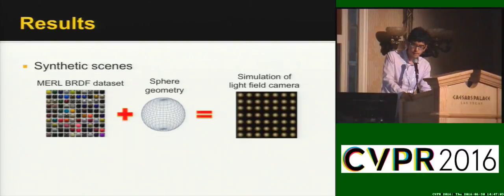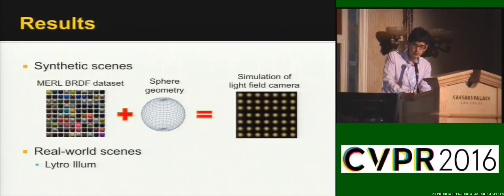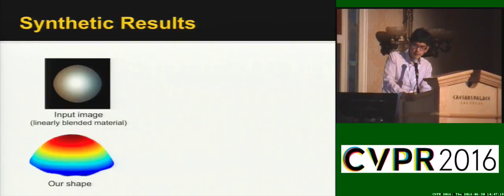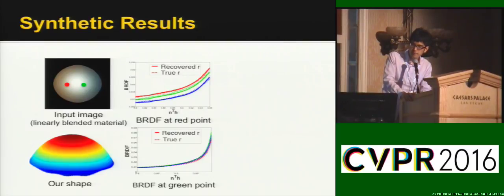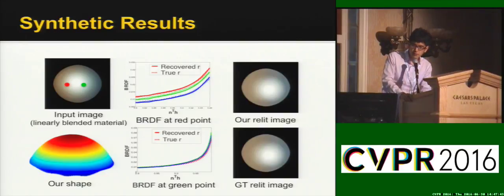Let's look at some results. For synthetic scenes, we render spheres using the MERL BRDF dataset to get simulations of the light field images. For real-world scenes, we use images taken with the Lytro Illum camera. This is a synthetic example. We linearly blend two materials from left to right for the input image, and below is our recovered shape. Here is our recovered and the ground truth BRDF at the red point in the input image. And these are the BRDFs at the green point. As you can see, they are very similar to the ground truth. Finally, we show a relighting example which again looks very similar to the ground truth.